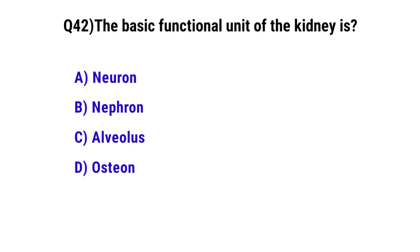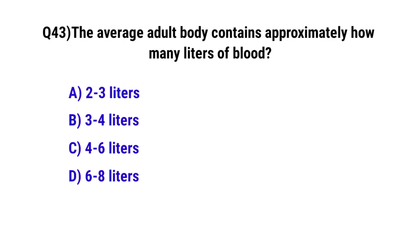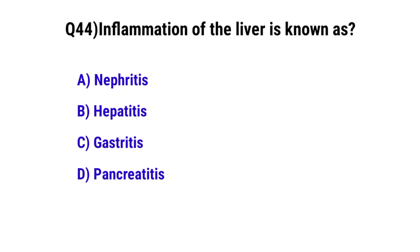Question No. 42: The basic functional unit of the kidney is — the correct option is B: nephron. Question No. 43: The average adult body contains approximately how many liters of blood? The correct option is C: 4 to 6 liters.